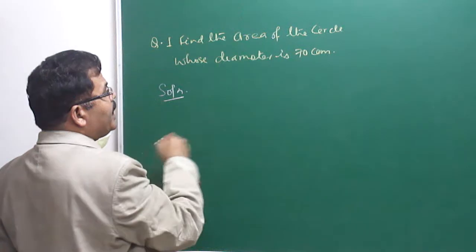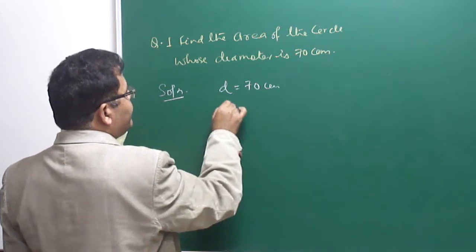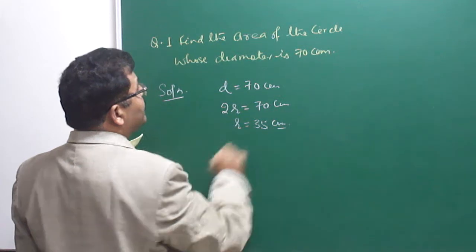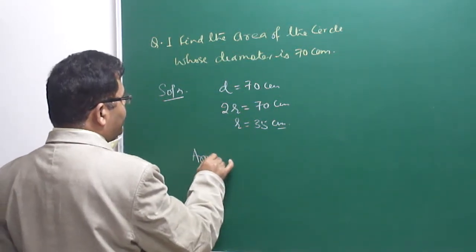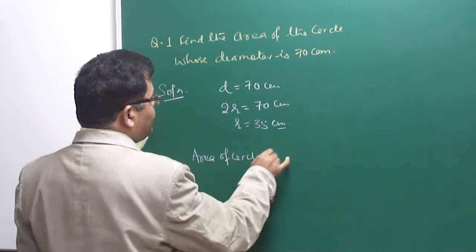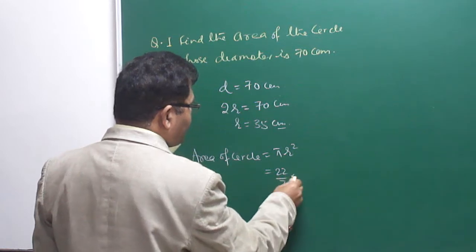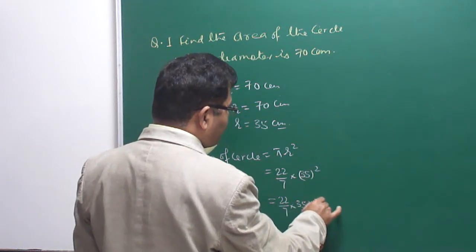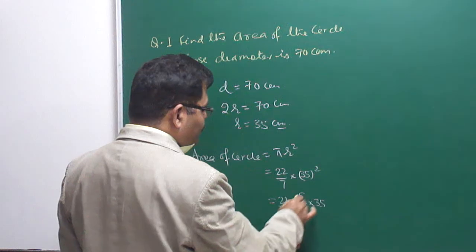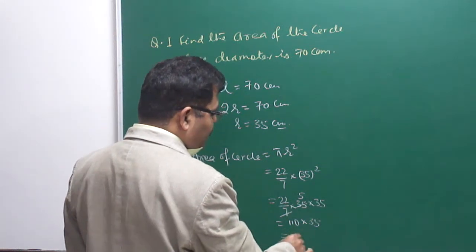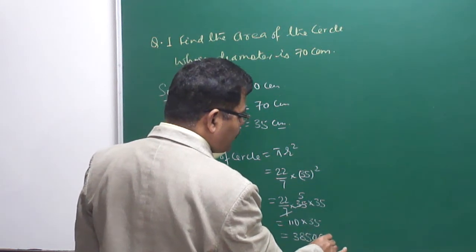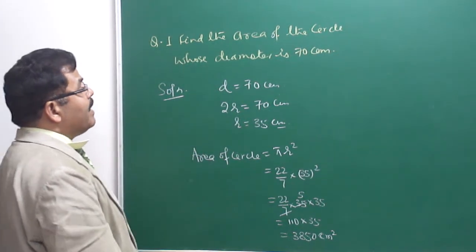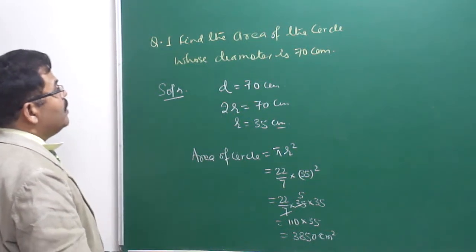For the solution: diameter is given as 70 cm. Diameter is twice the radius, so radius = 35 cm. Area of circle = πr² = (22/7) × 35 × 35 = 22 × 5 × 35 = 110 × 35 = 3850 cm². This is the area of the circle.